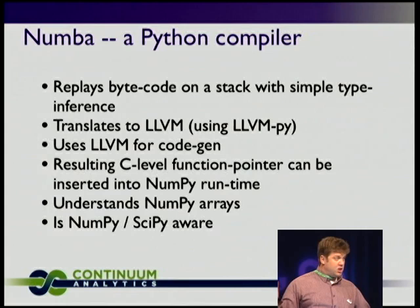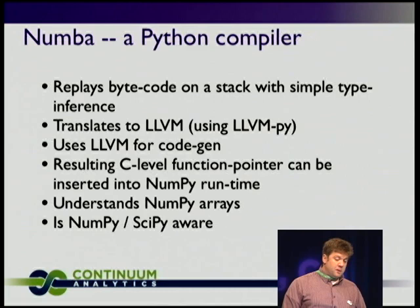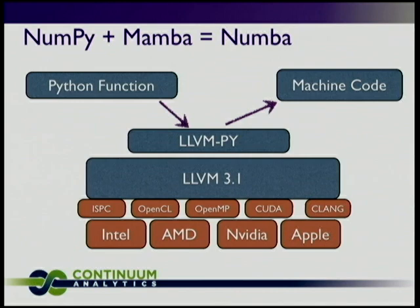It uses LLVM to do code gen and gives you back a C-level function pointer that can be inserted into the NumPy runtime at multiple places. We're going to be modifying NumPy to allow it to receive more and more function pointers. It's NumPy and SciPy aware. The reason for LLVM is that all the industry is using it as an intermediate representation. NVIDIA's new compiler works on an LLVM tool stack. Intel's OpenCL compiler works on an LLVM tool stack. Apple uses CLang, which produces LLVM code. So you have this plateau of code reuse at the very low level using LLVM — a great place for C extensions to also produce LLVM from Python code.